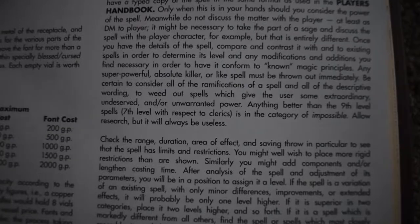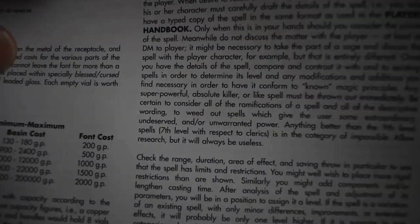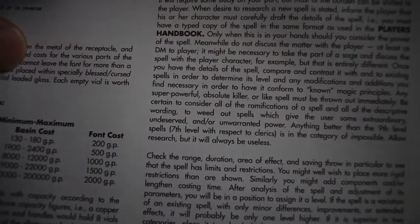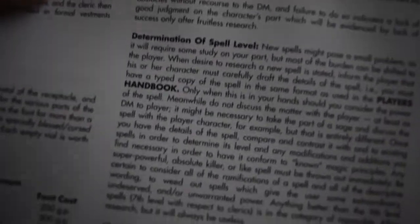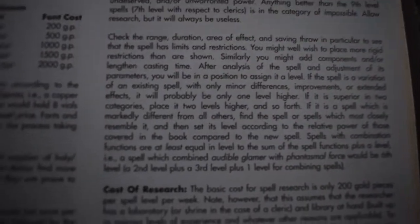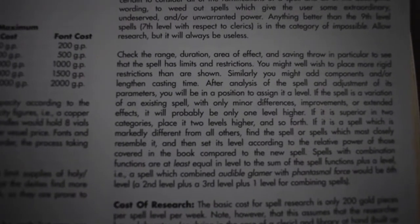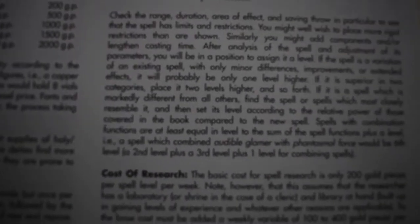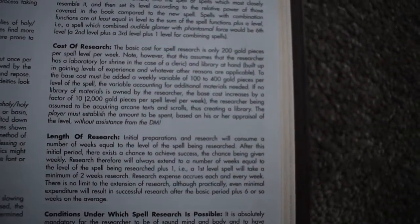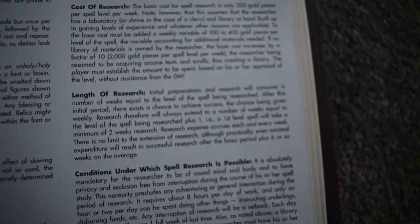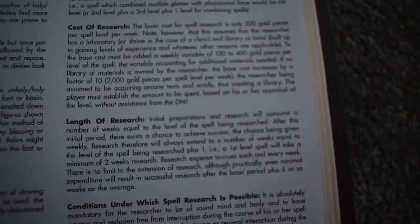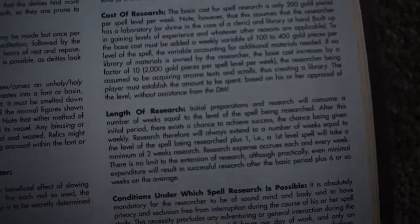Clerics and druids can still create their own spells and do everything else, but they have easier access to the full list of spells, so their need to create new spells is generally a lot less. The magic user who has to greedily find things — that's different. So time: we're talking about weeks per spell level.